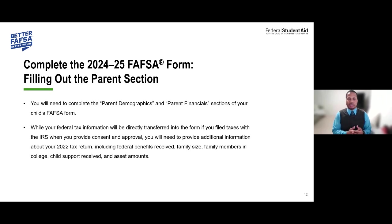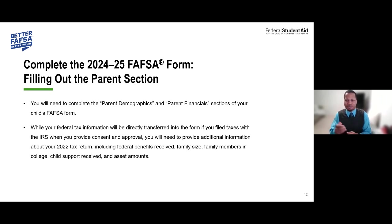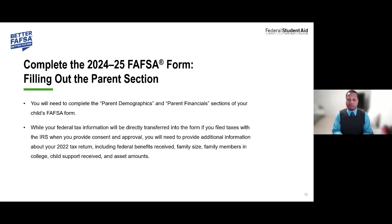When completing the parent section, you'll provide parent demographic and financial information. With the new FAFSA, you don't have to go line by line entering data from your tax returns — once information is successfully populated, you move on to additional questions around benefits and family size. Family size should match what's reported on your tax returns. Also note that for the 2024-25 FAFSA year, the number of college students in your family will no longer impact the SAI calculation, though we still ask the question — so please answer accurately.